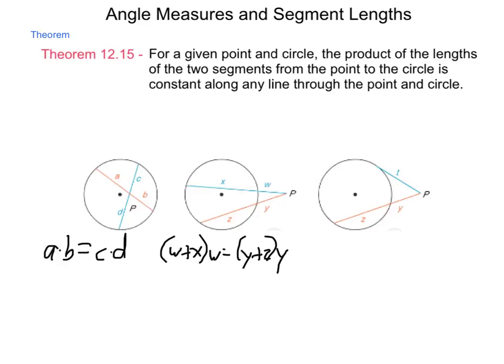And simply put, a secant is a line that intersects a circle that is not tangent. So the length of the entire secant times just the outer segment will equal the other secant and its outer segment.